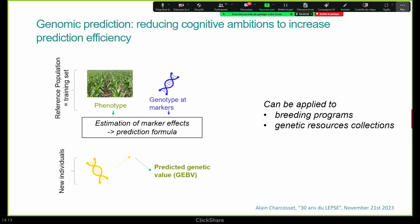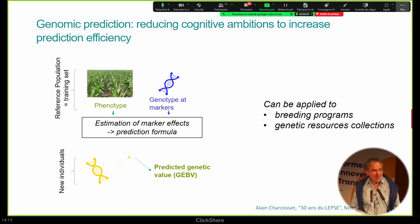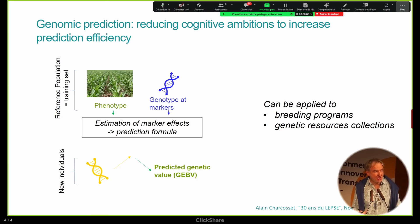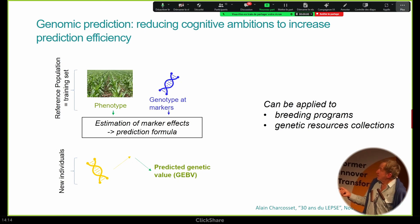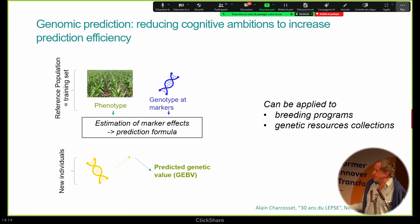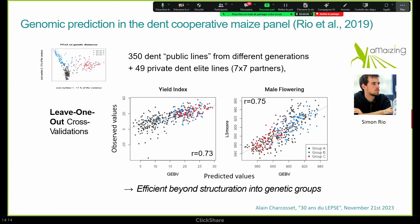A final part before finishing is about genomic predictions. To make it very simple: you have a reference population with phenotypes and genotypes, you estimate marker effects. The idea now is not so much to localize QTLs; you accept to reduce a little bit your cognitive ambition to increase prediction efficiency. What is more important is that the statistical model is efficient to predict the value of new individuals based only on their genotype. We checked in the Maisadour panel with Simon Rio that it was working very, very nicely — not just repredicting subgroups within the populations, but even within group.